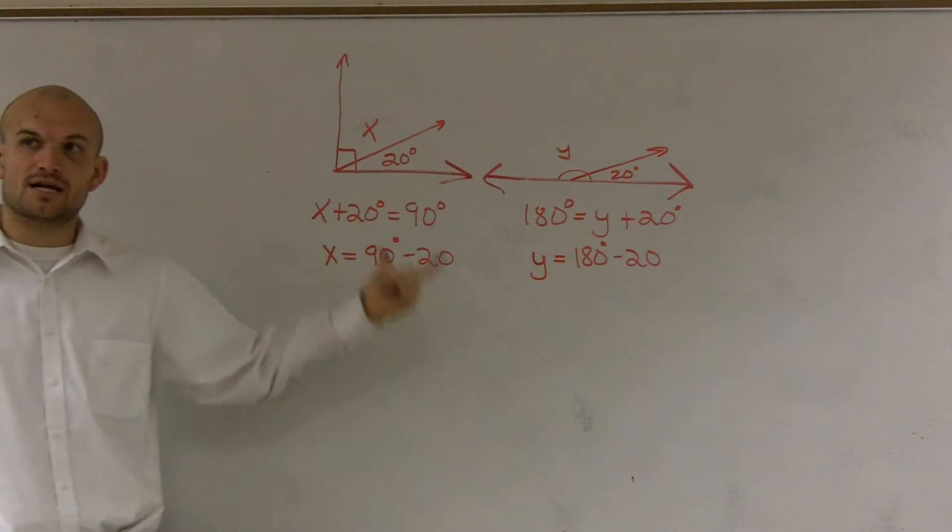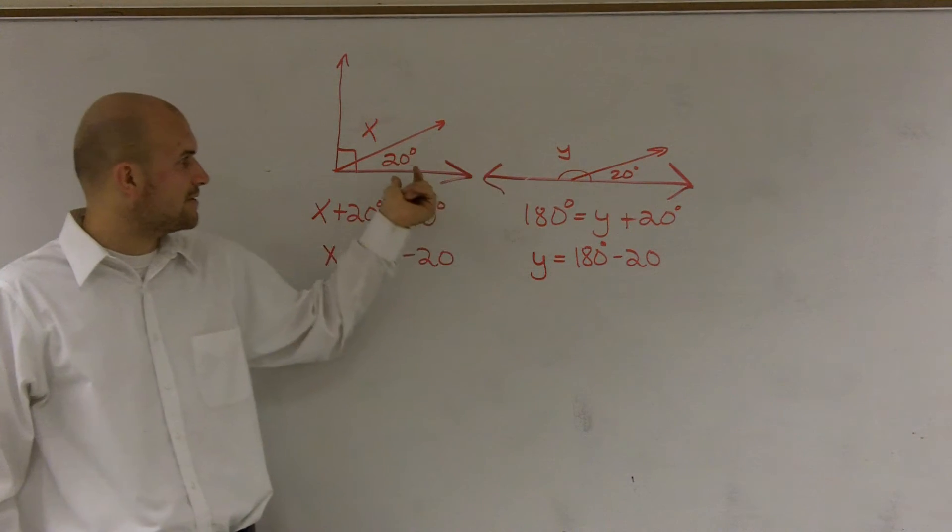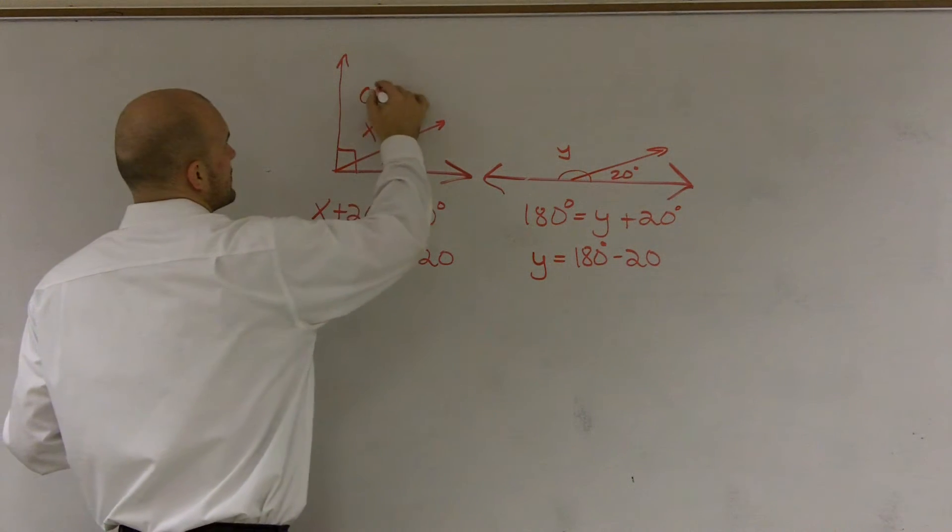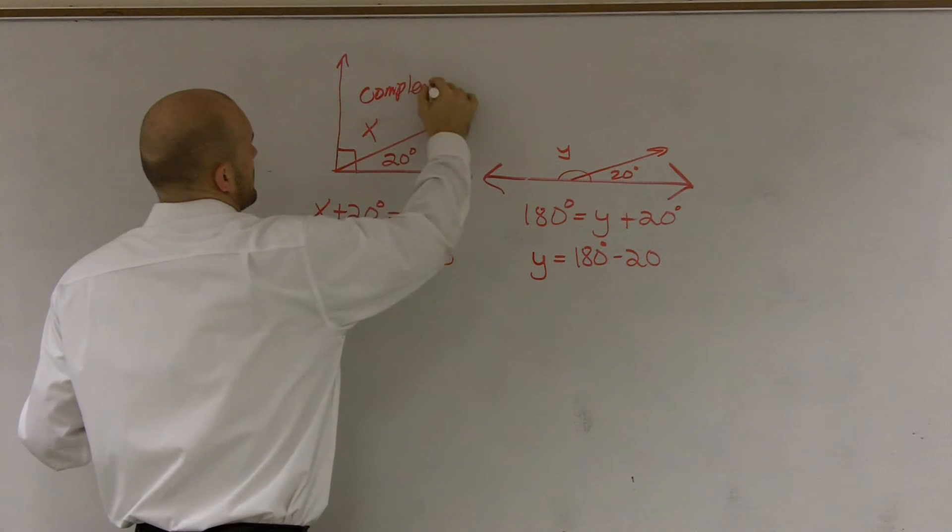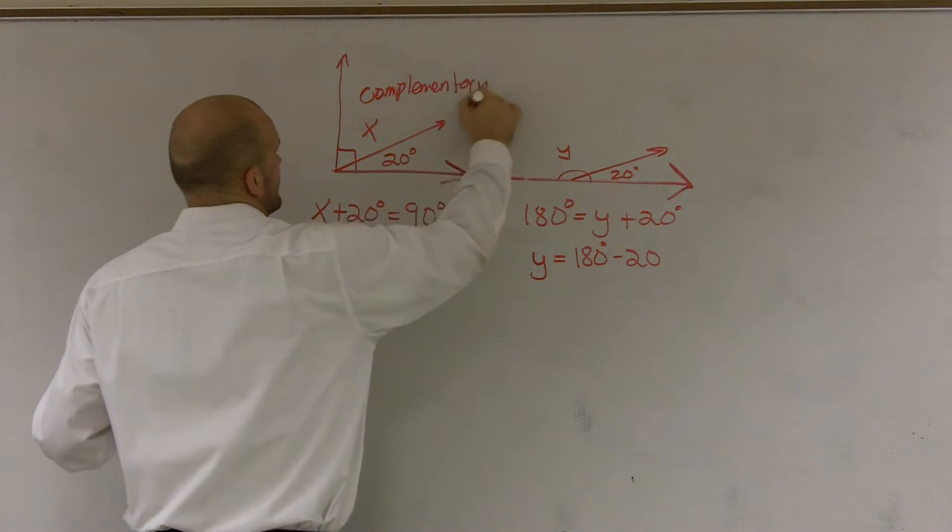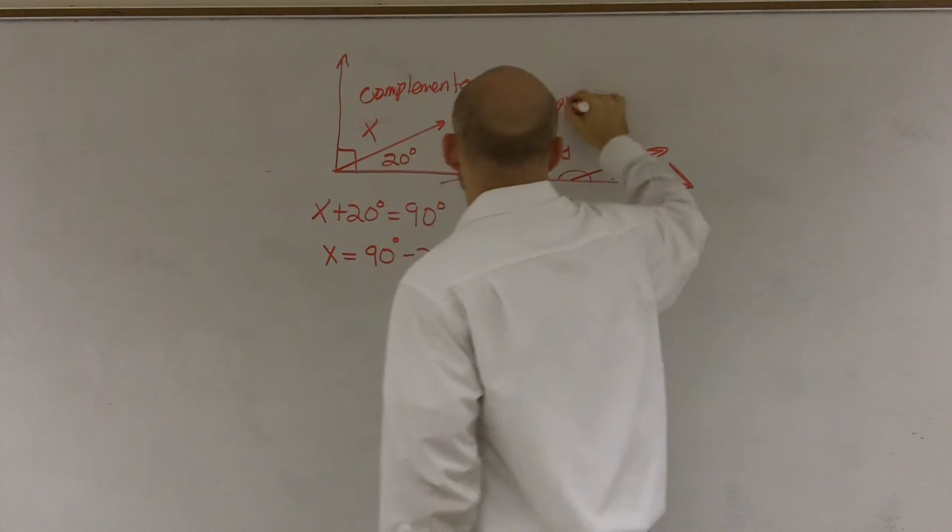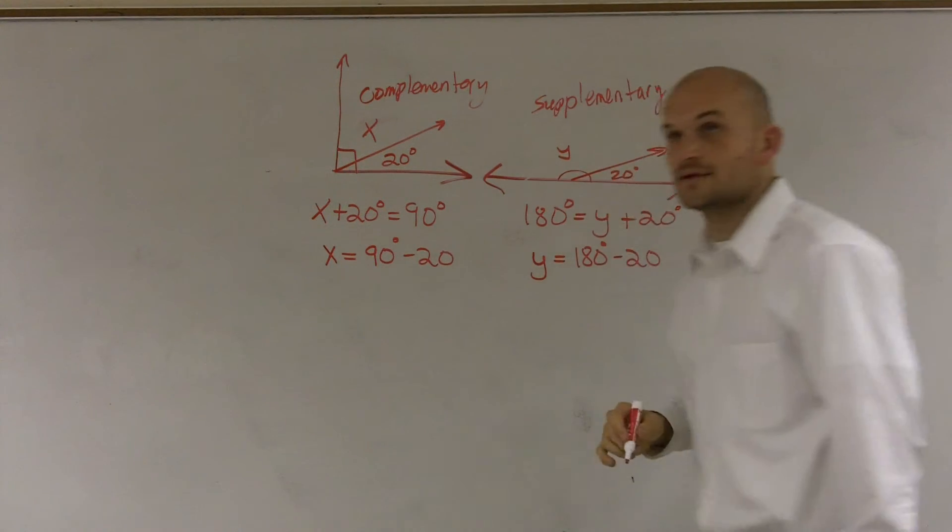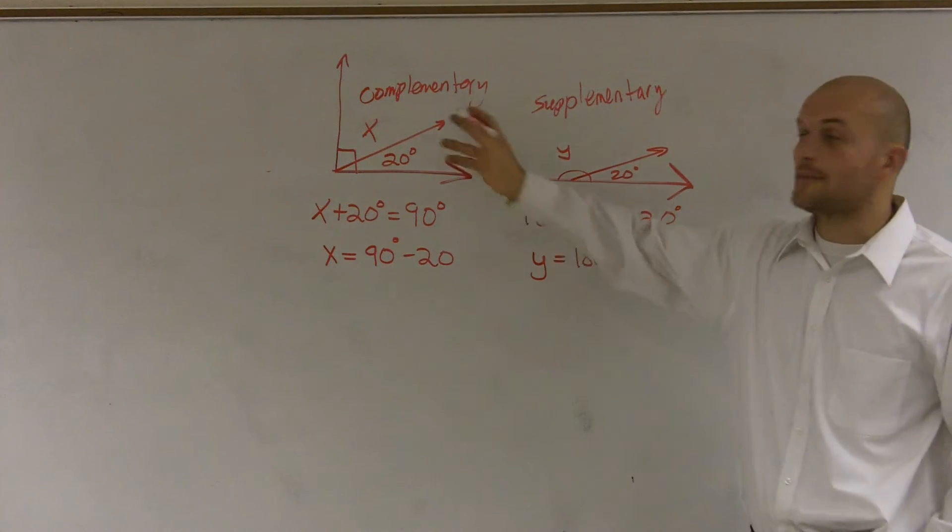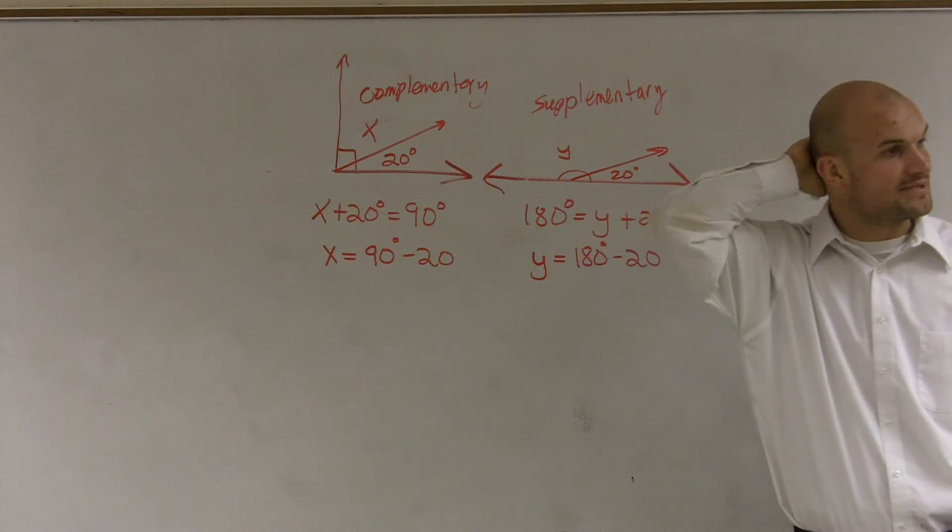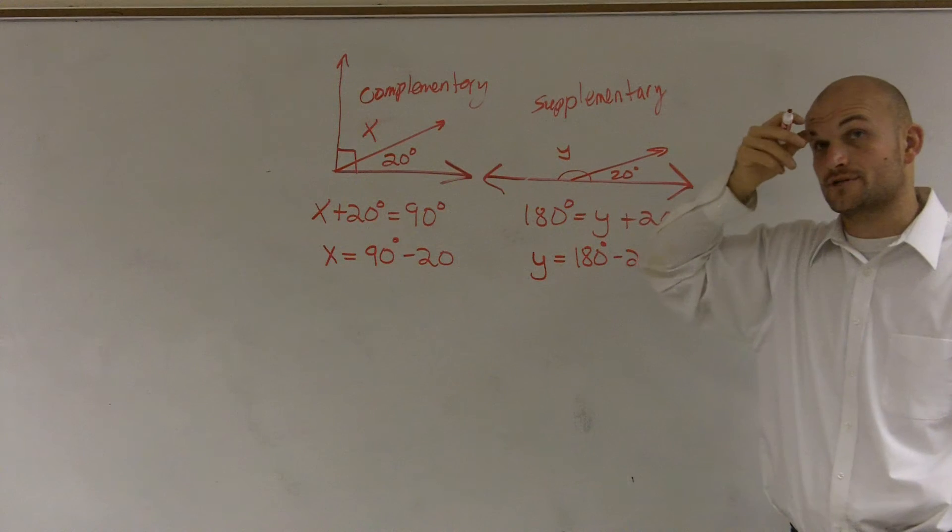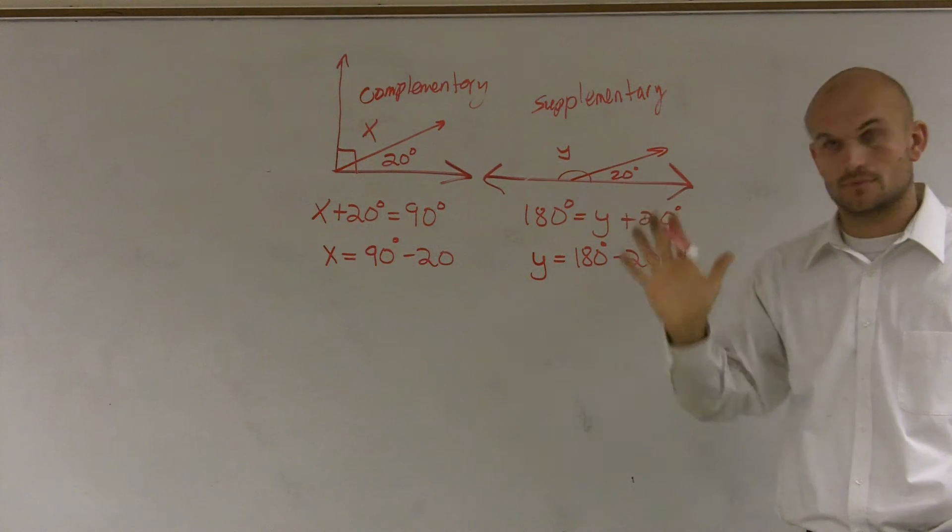Now we're going to be talking about these, and remember we call these two angles what we call complementary, and these are what we call supplementary. Complementary are when two angles add up to equal 90 degrees, and supplementary are when two angles add up to give you 180 degrees.